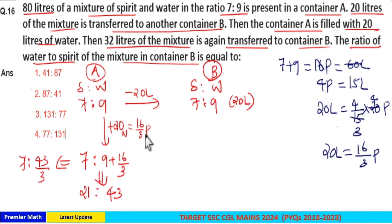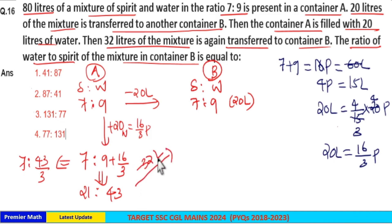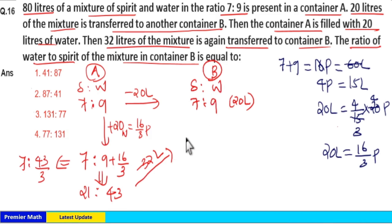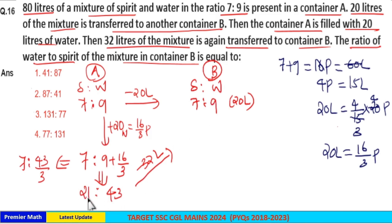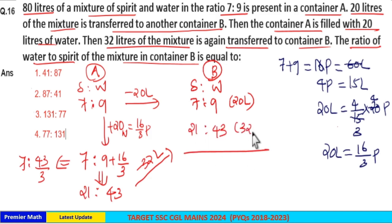When you add 20 liters of water, the ratio in container A becomes 21:43. Now you are transferring 32 liters again from this 21:43 ratio mixture to container B. This 32 liters also contains spirit and water in the ratio 21:43.